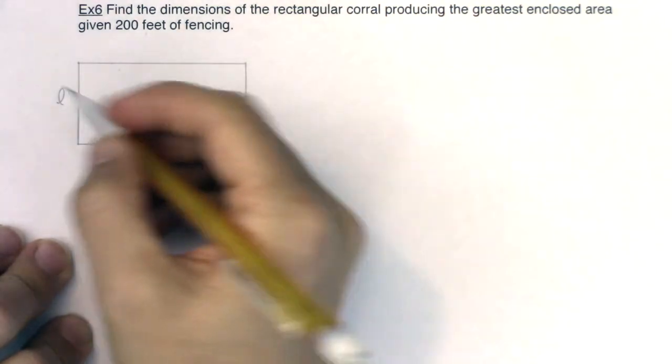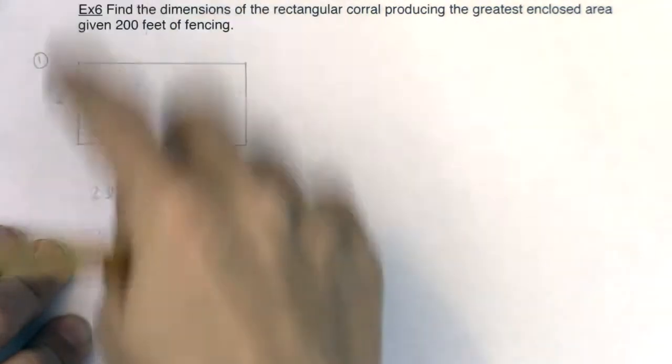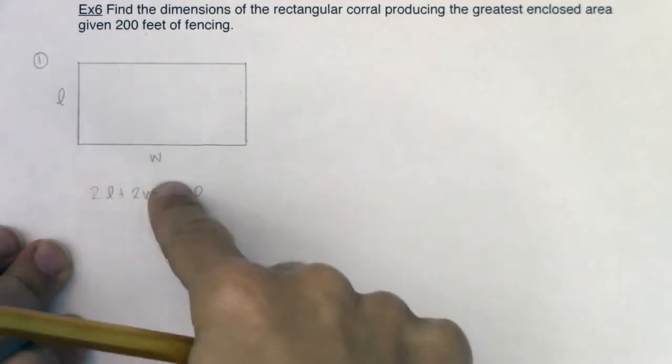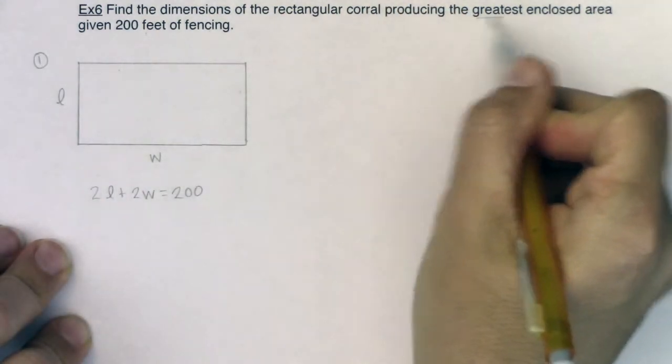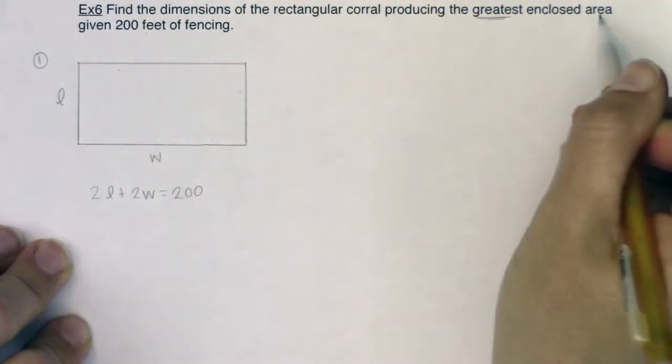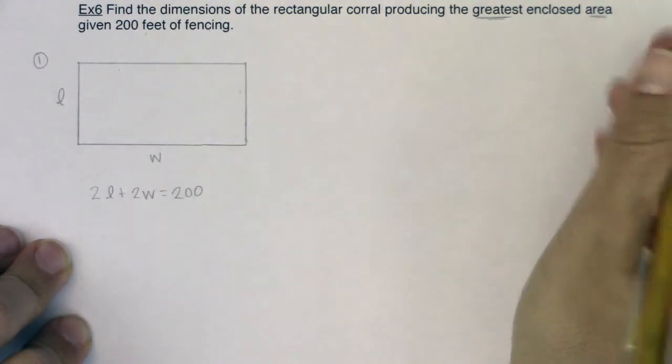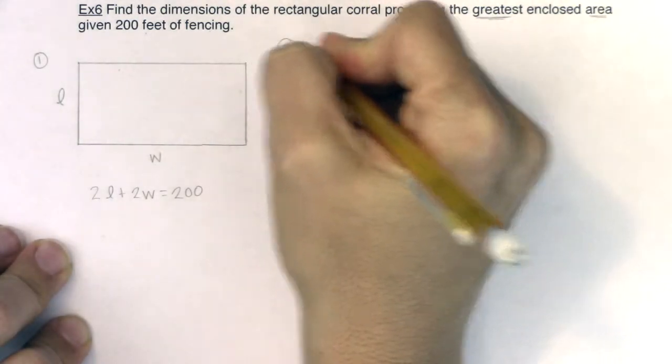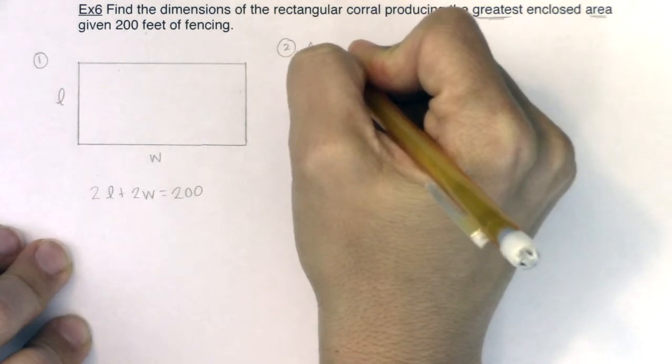At this point, my first step would be establishing that my two variables are length and width. The other thing I notice is this word greatest. I want a maximum and I would like to have the maximum area. So the next thing I want to do is create an area formula.